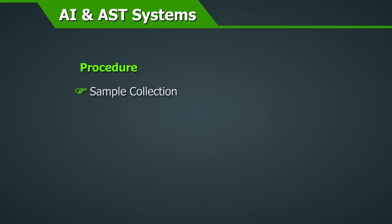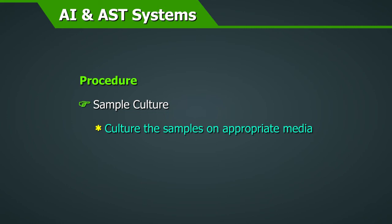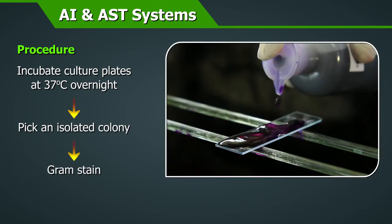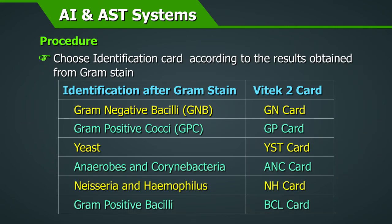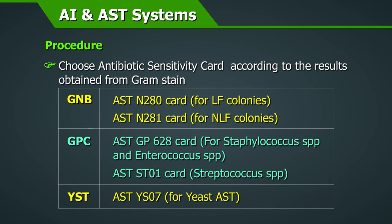Procedure — Sample collection: Collect samples by recommended methods. Culture the samples on appropriate media by methods described in the section on culture methods. Incubate culture plates at 37 degrees centigrade overnight. After incubation, pick an isolated colony and perform a gram stain. Choose the identification card for Vitek 2 compact according to the results obtained from the gram stain. Choose the antibiotic sensitivity card according to the results obtained from the gram stain.